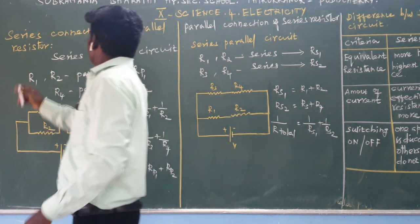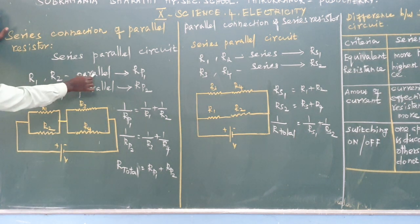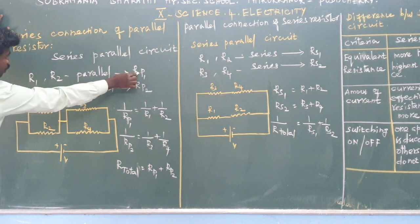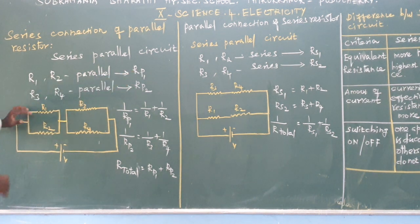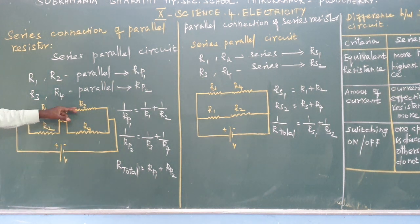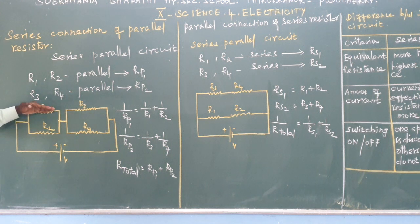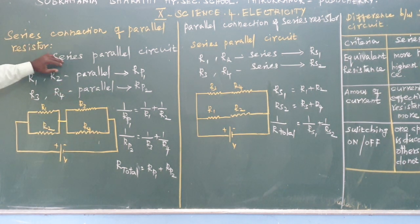Now, the series condition of parallel resistors. So R1 and R2 are connected in parallel, giving a total value Rp1. Already I explained that resistors connected end-to-end are series. So resistors are connected one by one. You can connect with these resistors to get a series-parallel circuit.